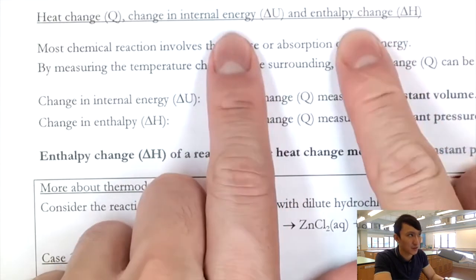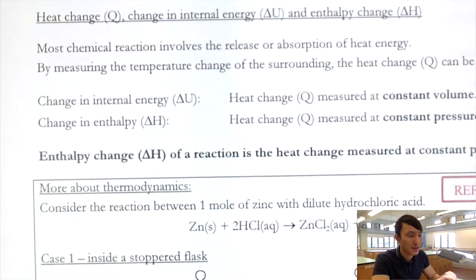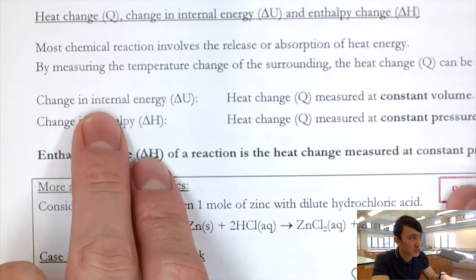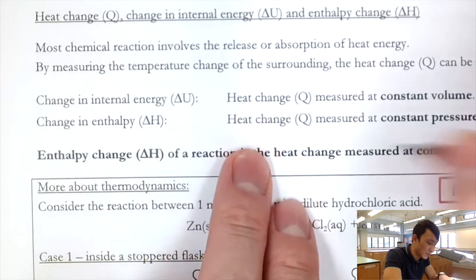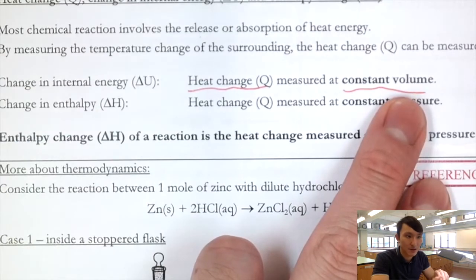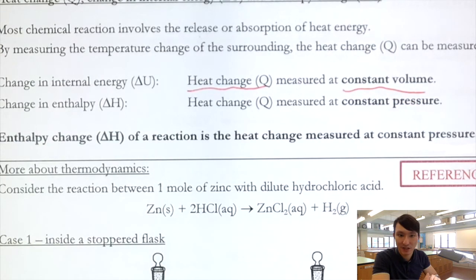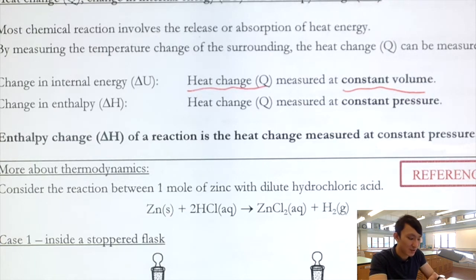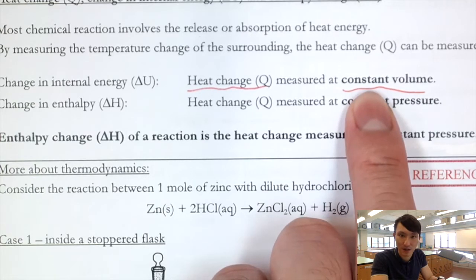The difference between heat change and enthalpy change: change in internal energy is defined as the heat change at constant volume — meaning the reaction takes place in a rigid container whose volume cannot change. For example, a glass bottle, a stoppered conical flask, or a stoppered test tube — these are all containers with constant volume.